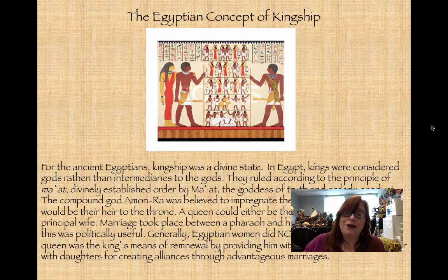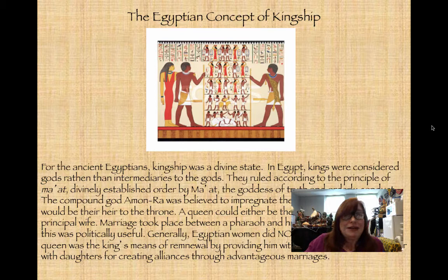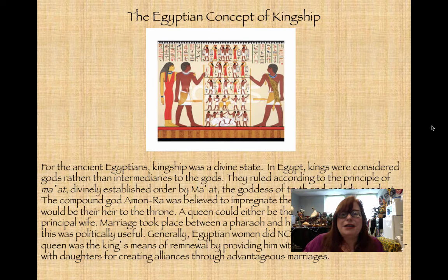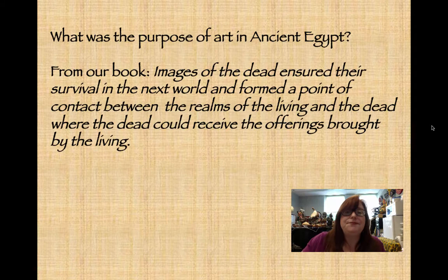Amun-Ra was a compound god of the sun gods Amun and Ra, believed to impregnate the king so that a son would be heir to the throne. The queen could be either the king's mother or his sister — yes, they married their siblings, which caused problems as you might imagine. Generally Egyptian women did not become pharaohs themselves, but there are a few notable exceptions we'll get into later. The queen served as the king's means of renewal by giving him heirs or daughters for alliances with other kingdoms.